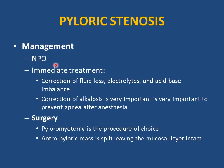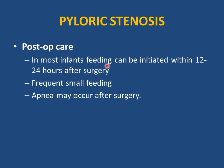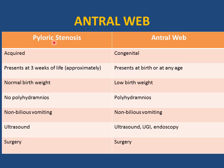Management of pyloric stenosis: keep NPO, then correct dehydration and electrolyte imbalance first — this is the most important step. Give an IV fluid bolus, then correct electrolyte and acid-base imbalance. Correction of alkalosis is critical to prevent apnea after anesthesia. The definitive treatment is surgical pyloromyotomy. Post-operatively, feeding can be initiated 12-24 hours after surgery with frequent small feeds increased gradually. Watch for post-operative apnea.